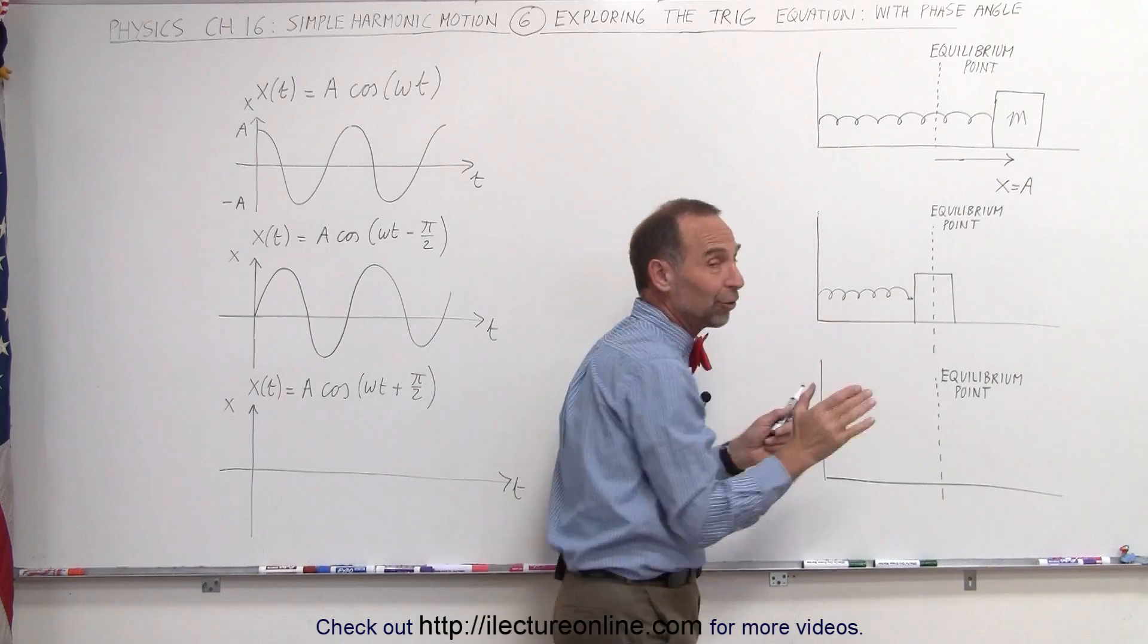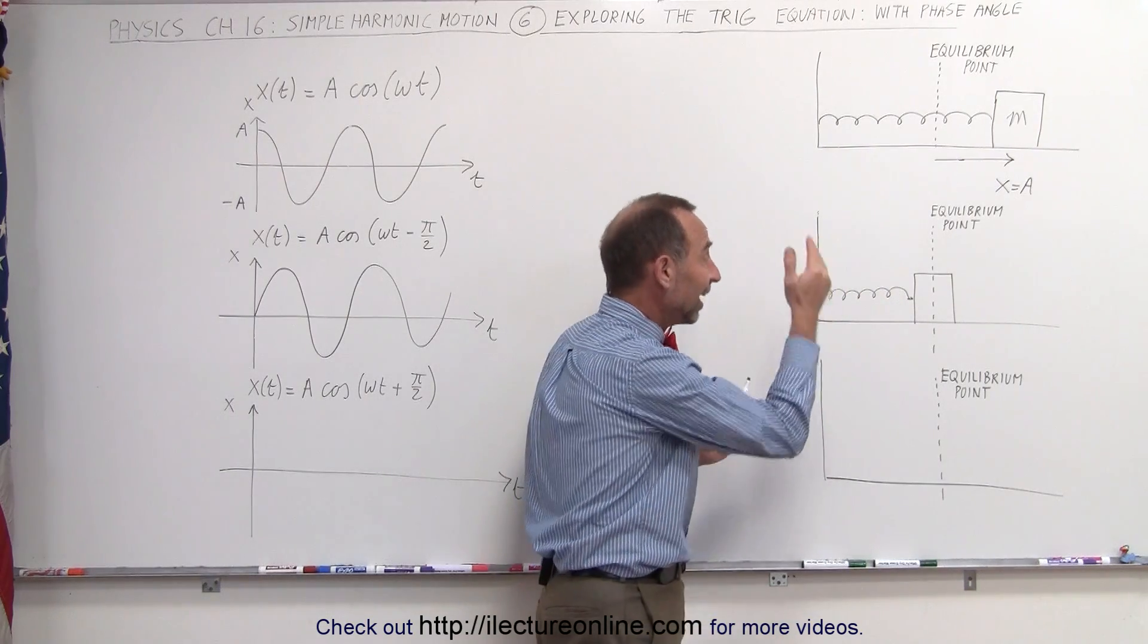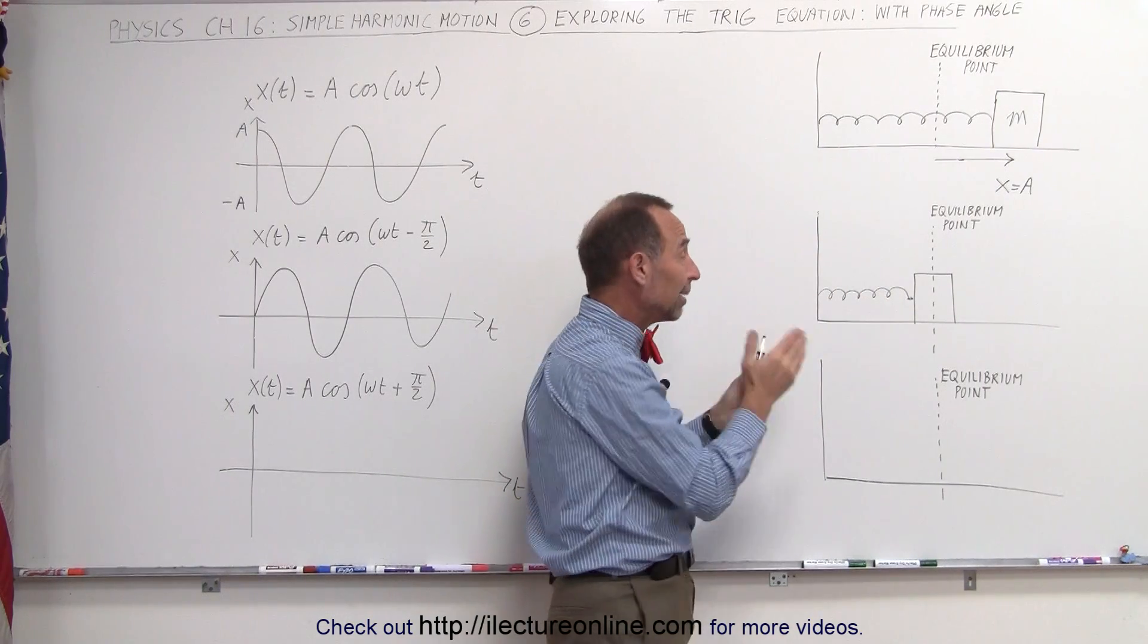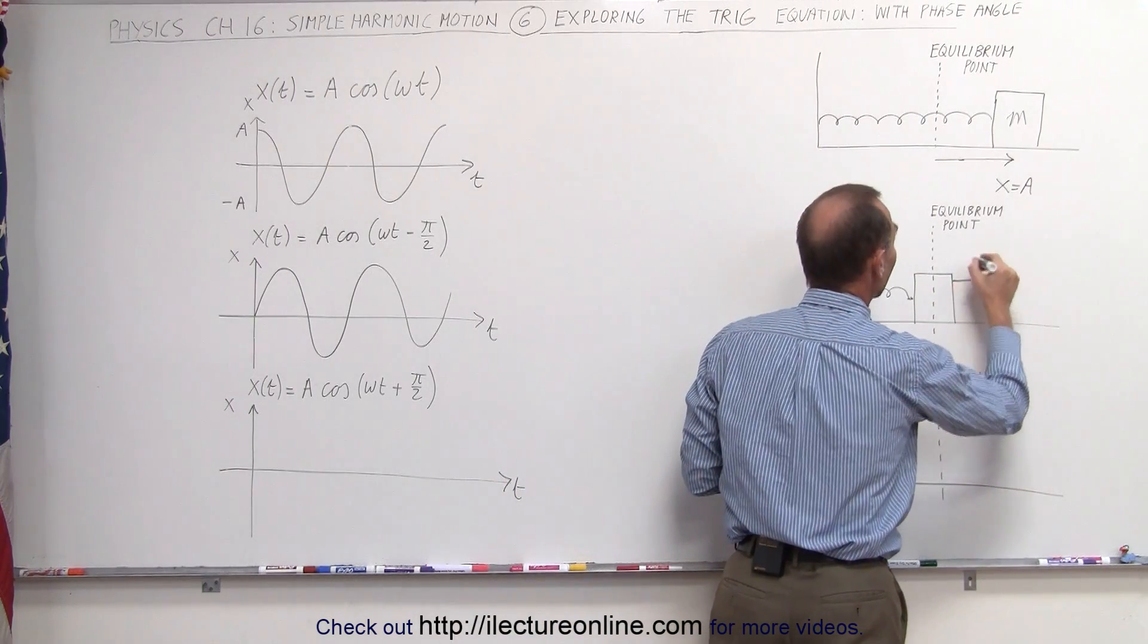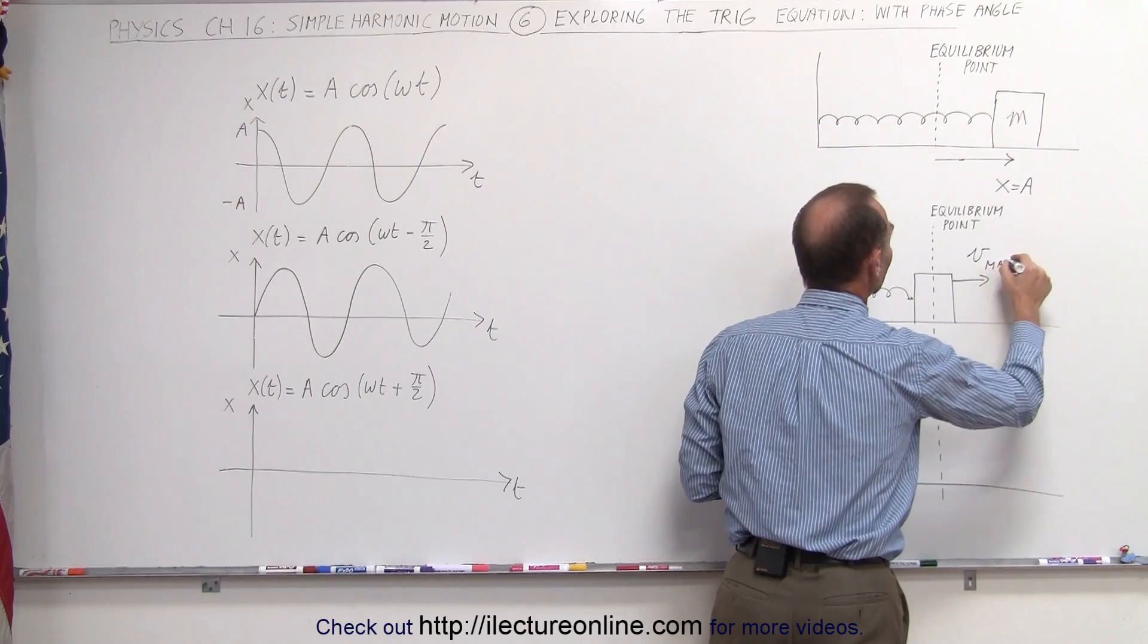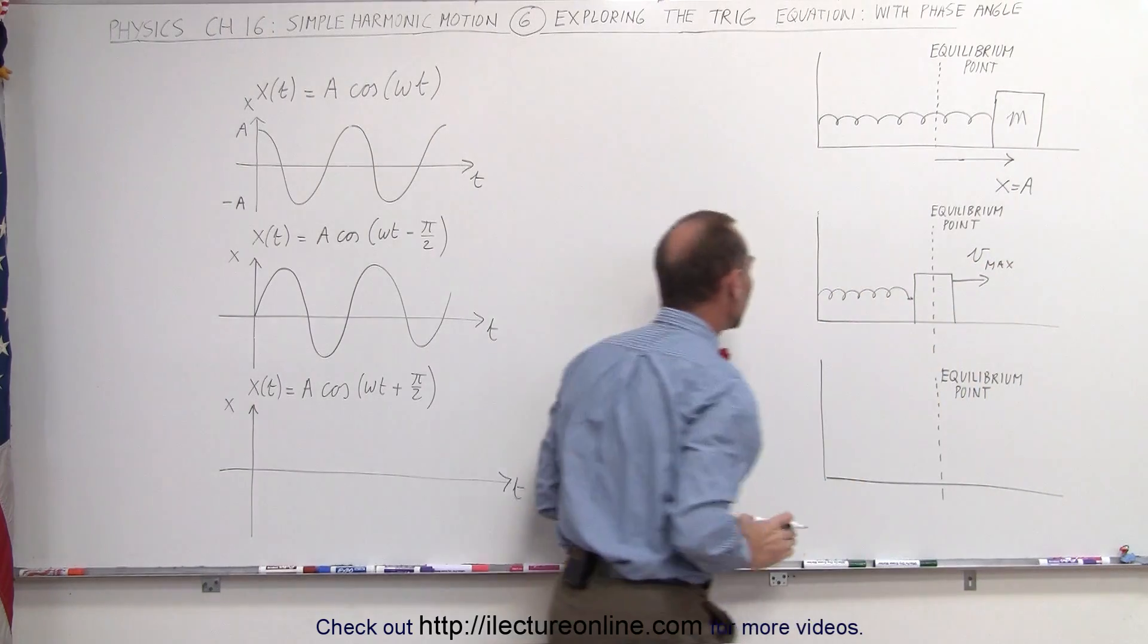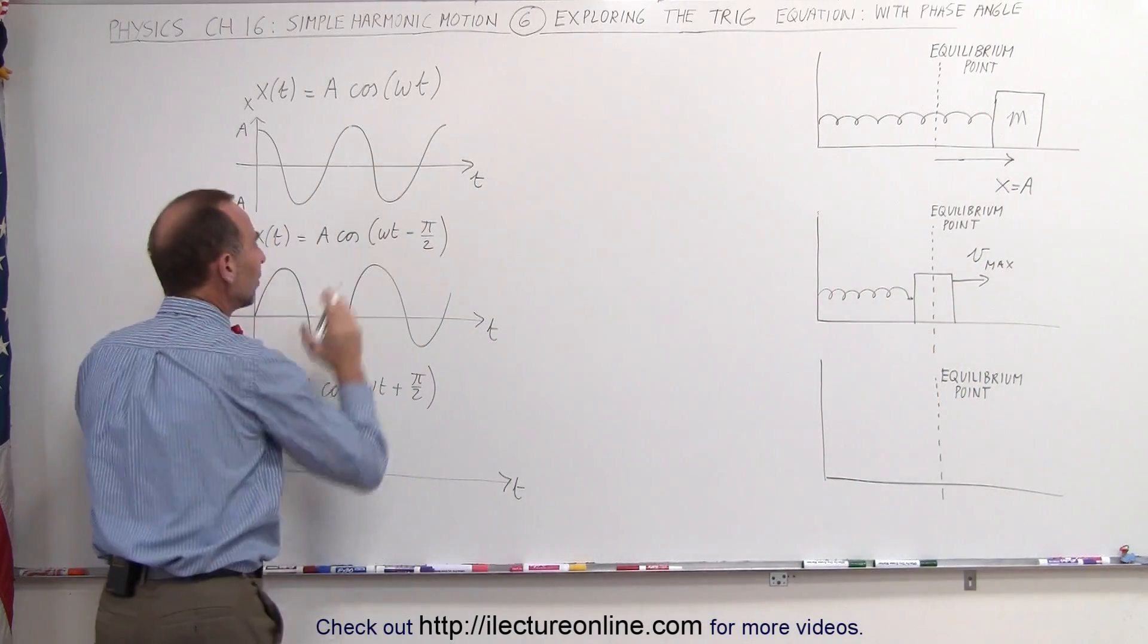In other words, this equation right here is represented by the block being right here at the equilibrium point, with the spring pushing the block. And notice at that point, at this very moment, the spring is not doing anything at all because it's at the equilibrium point, so at that moment the spring is not pushing the block, but the block will be moving to the right at maximum velocity, vmax. So that would be the initial condition represented by this equation.